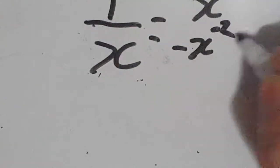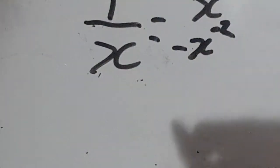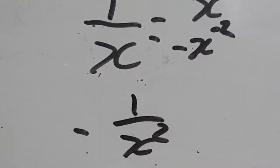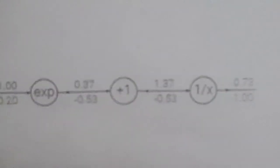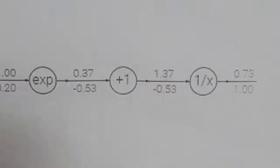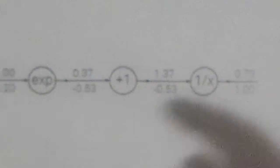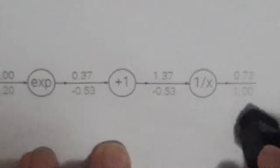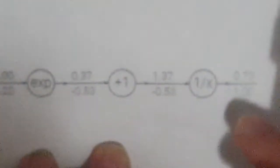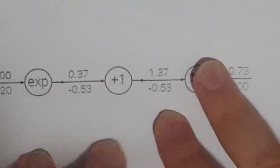Next we have 1/x. The derivative of that — 1/x is the same as x to the negative 1 — gives us -1/x². The value at this point is 1.73, so we plug that into -1/x² and get -0.53. With the chain rule we also multiply by the previous gradient, which was 1, so we get -0.53 times 1 = -0.53.